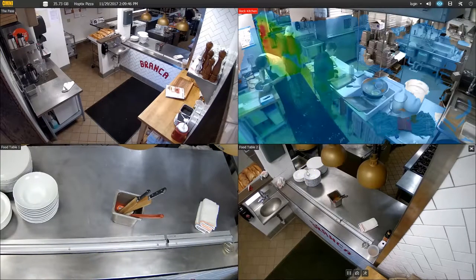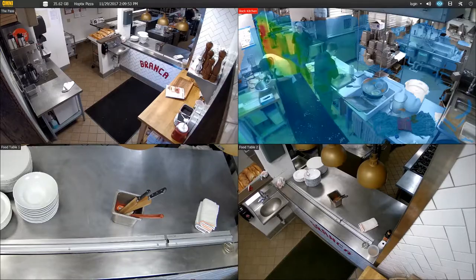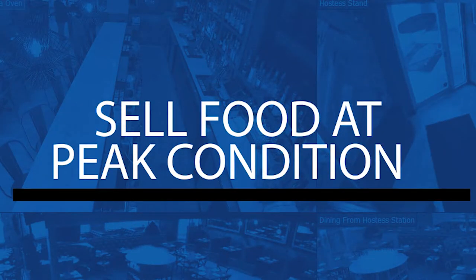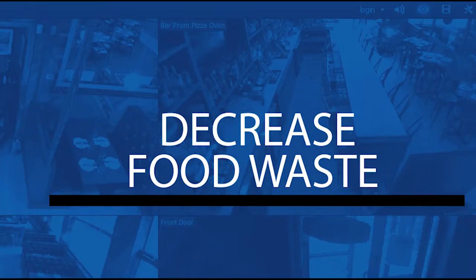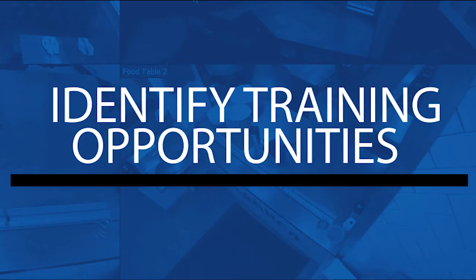Hello and welcome to yet another tutorial video on how to use our camera system. In this video we will be reviewing how to review what's called unattended objects. This would be used primarily in cases where something is left behind for too long — for example, a hot plate of food waiting to go out, and we discover it got cold and sat there too long, and we want to see when that may have happened.